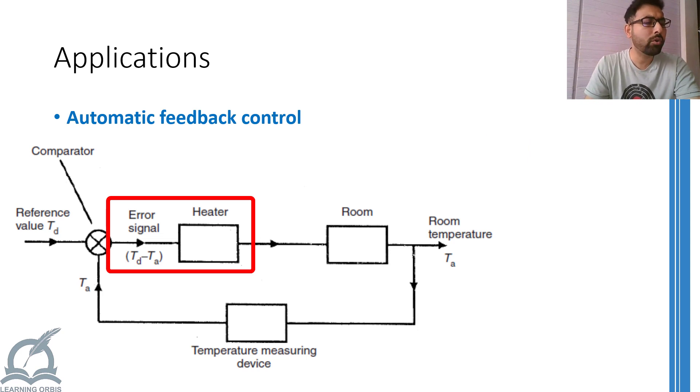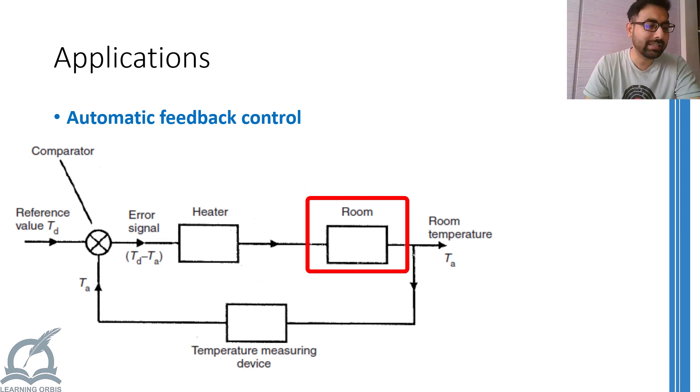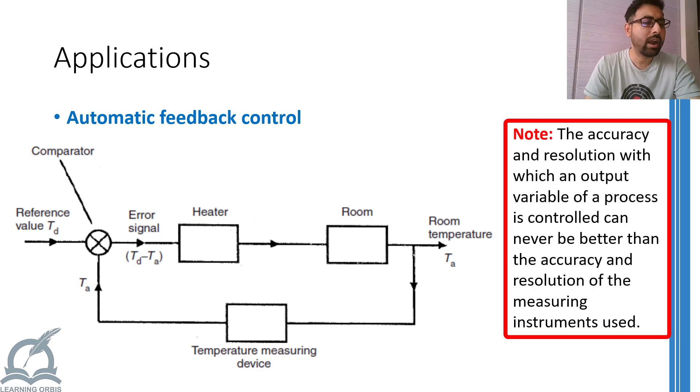This on-off or more practically tripping off heater will continue for as long as you leave the heater on and the temperature of the room will keep on fluctuating around 26 degrees Celsius. One thing to notice over here is that the amount of fluctuations around your set temperature will depend on a number of factors out of which the accuracy and resolution of the temperature sensor would be the most important.